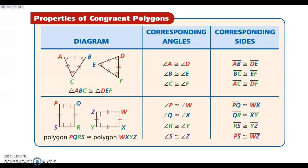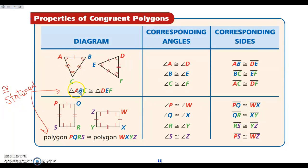The reason for that is when we write congruent statements, the order of letters matters. If I say triangle ABC is congruent to triangle DEF, angle A is the first letter here and angle D is the first letter here — they match by position, so they are corresponding angles and are congruent. The middle letters B and E are corresponding angles, and the last letters C and F are also corresponding and congruent.